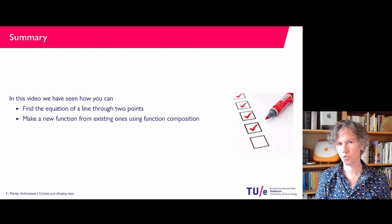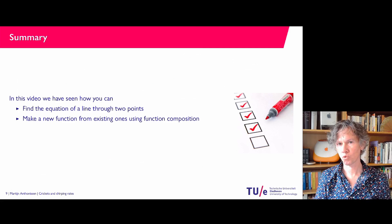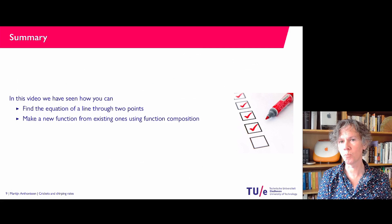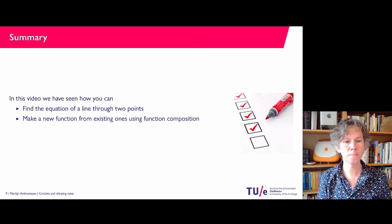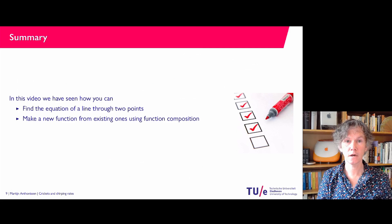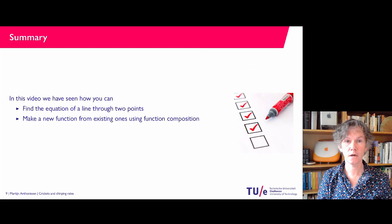So let me wrap up. What have we seen in this video? We have revisited — something you already know — how to find the equation of a line through two points: first compute the slope, then compute the B value. And we have already seen how, if you have two functions, you can combine them using function composition to create a new one. I hope everything was clear. If you have any comments, let me know, and I'll be happy to see you in a future video. Thank you very much.